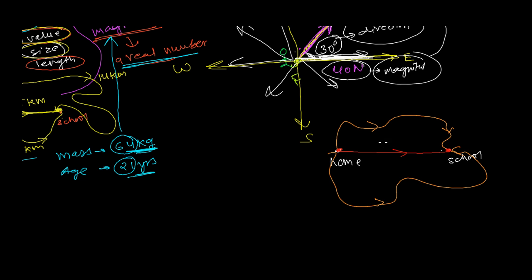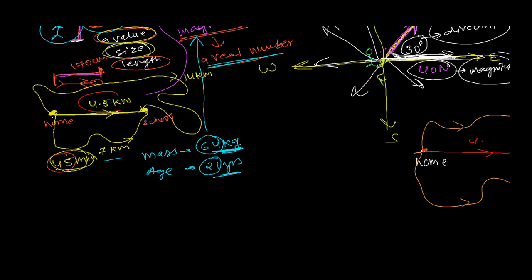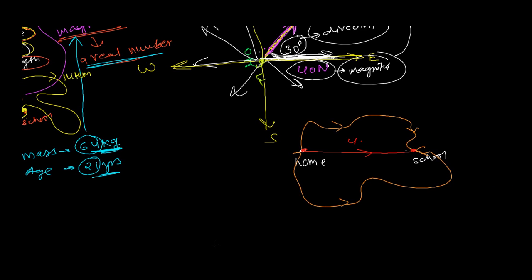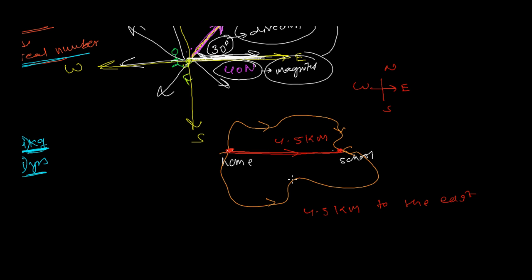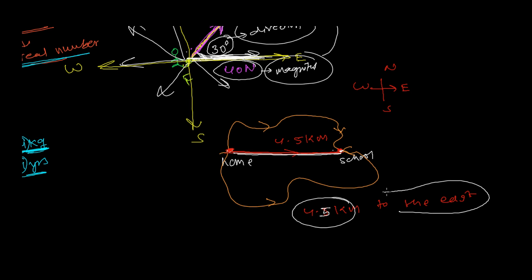The shortest distance is 4.5 kilometers — but that time I hadn't told you about the particular direction. Now let's say this 4.5 kilometers goes pretty straight to the east. Looking at compass directions — east, west, north, south — if from my home I go exactly towards the east for 4.5 kilometers, I reach the school. So two things are here: 4.5 kilometer is the magnitude (the distance I travel), and 'to the east' is the direction.